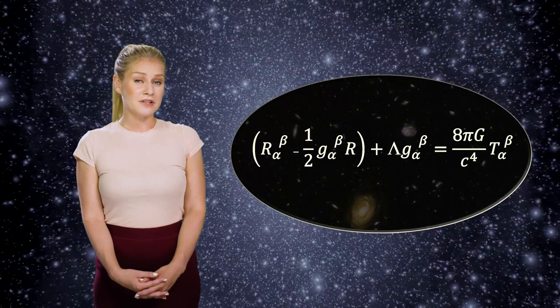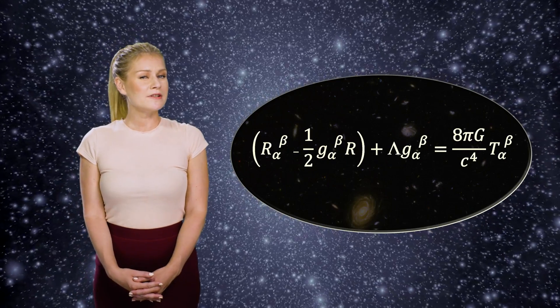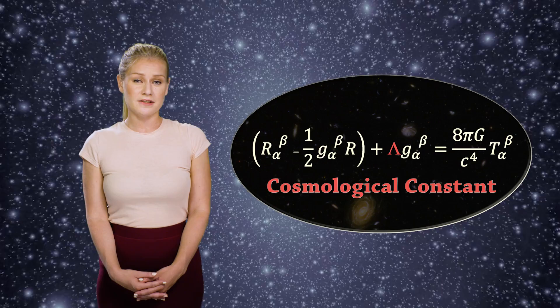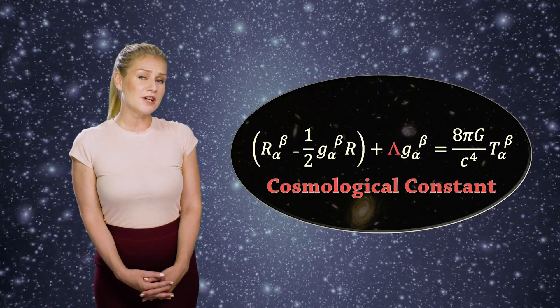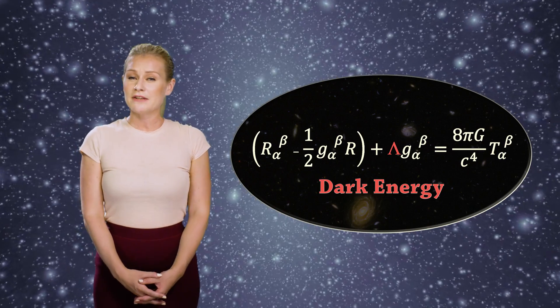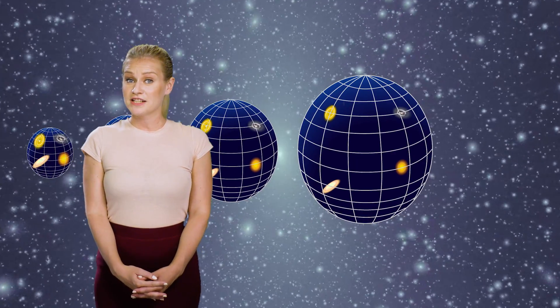Einstein's theory of general relativity was still valid. However, scientists had to change the value of what we call the cosmological constant. The cosmological constant is what we now refer to as dark energy. Giving it a larger value than Einstein had led to a description of the universe where space is not only expanding, but where the expansion is actually accelerating.